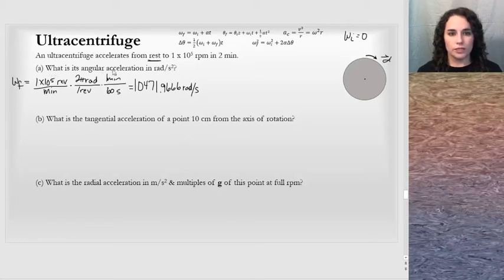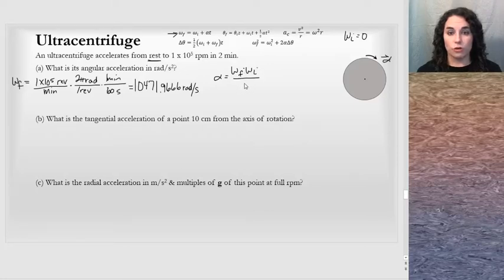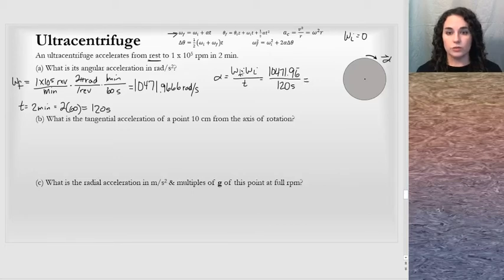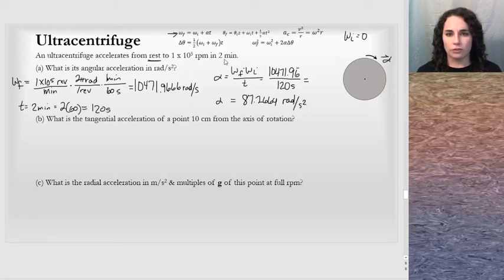To find the angular acceleration in radians per second squared, I use α = (ω_final − ω_initial) / t. With ω_initial = 0, that's just ω_final divided by the time. 2 minutes equals 120 seconds. Running this through the calculator gives α = 87.2664 radians per second squared. Rounding to one significant figure, that's approximately 90 radians per second squared — the answer for part one.